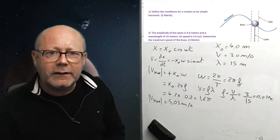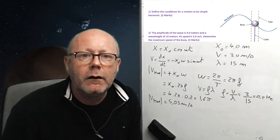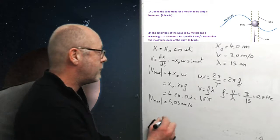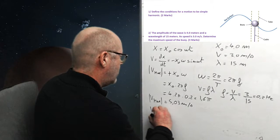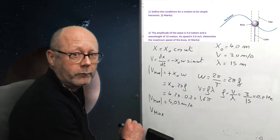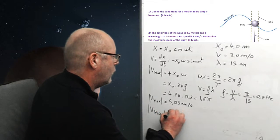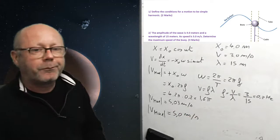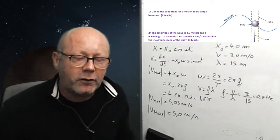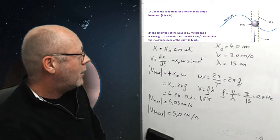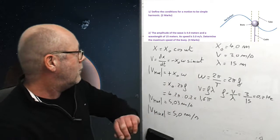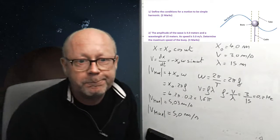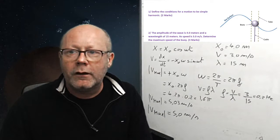So, vmax equals 5.03 meters per second. Okay. How many significant figures do we need? 4.0, 15, 3.0, 2. So, we have to round it. vmax equals 5.0 meters per second. That was a 3 mark question. So, I would estimate that this would give you a mark, this would give you a mark, and the number would give you a mark.